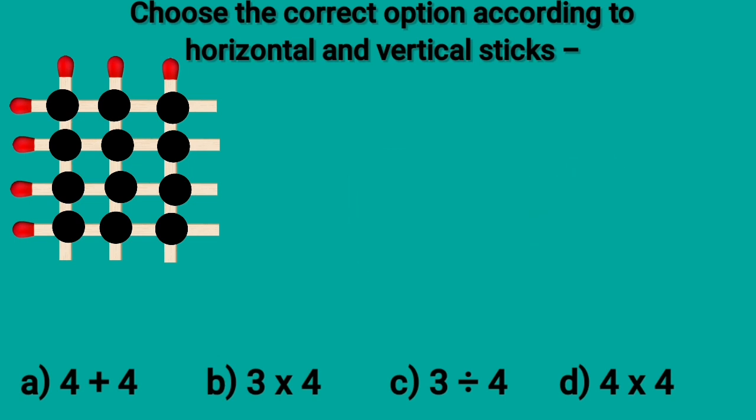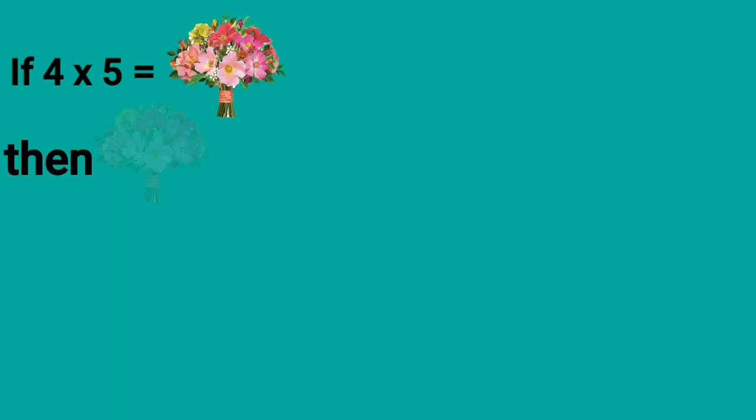So, the right answer is option B, 3 multiplied by 4. In our next question, if 4 multiplied by 5 is equal to flower pot, then the flower pot is equal to dash.